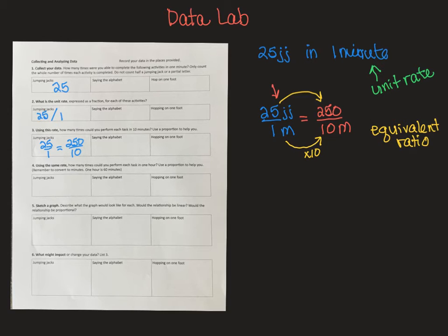In number four, it says how much could you do in one hour? So, we know that an hour is 60 minutes. I could take either one of these. I could take 25 to 1 or 250 to 10. But I'm going to take the original ratio. So, I have 25 jumping jacks to 1 minute, right. And so, my other side is going to be 60 minutes.